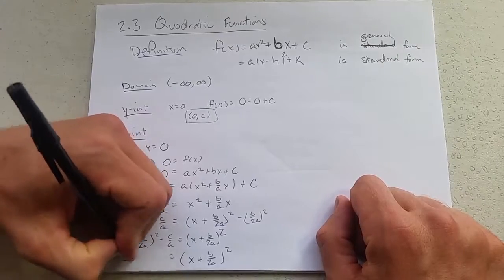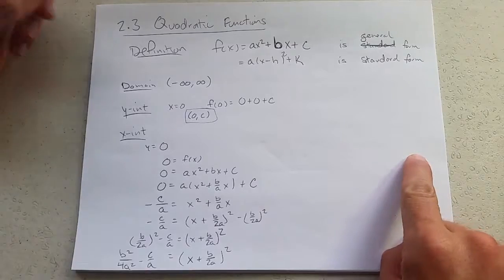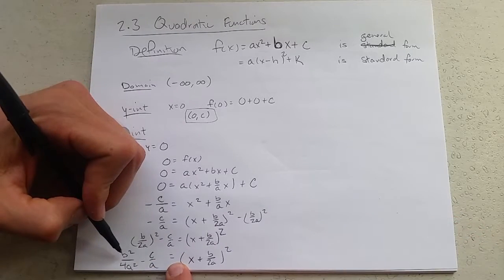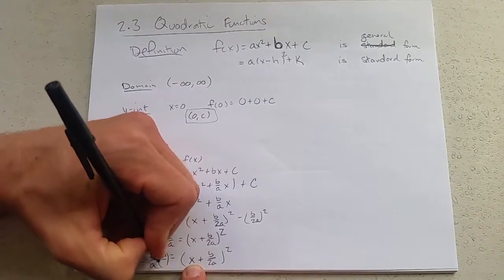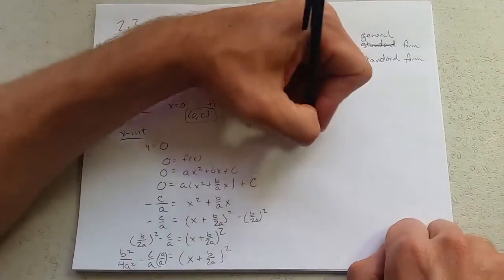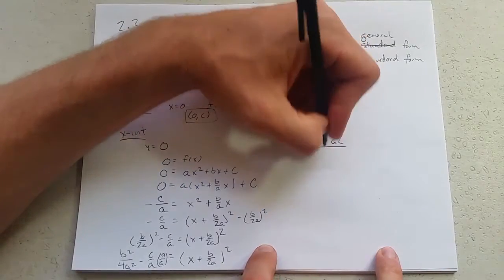FOILing: b squared over 4a squared minus c over a. Continue up here. I'm going to go common denominator down here, so I'm going to multiply by a over a. So we have b squared minus ac over... 0.5 per...